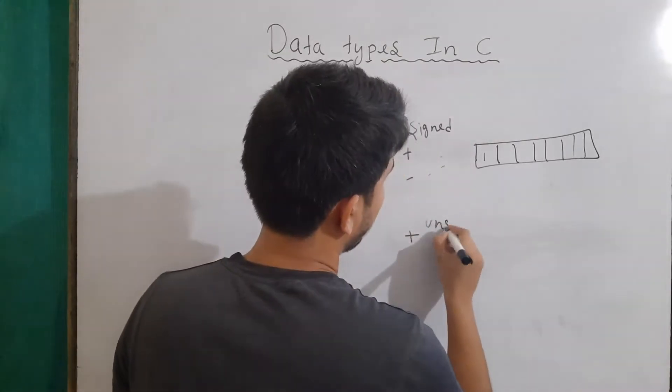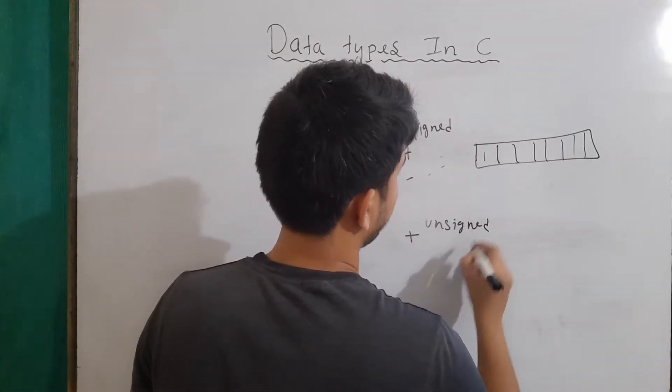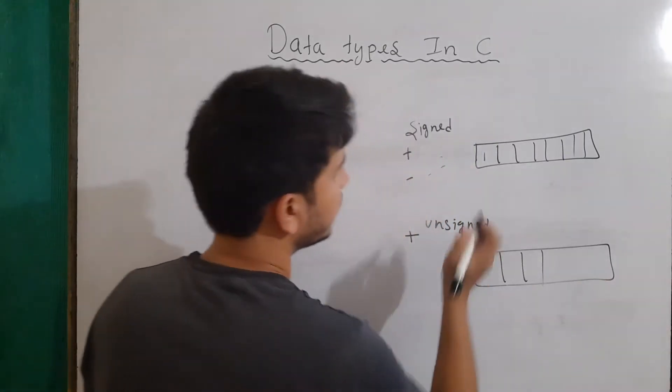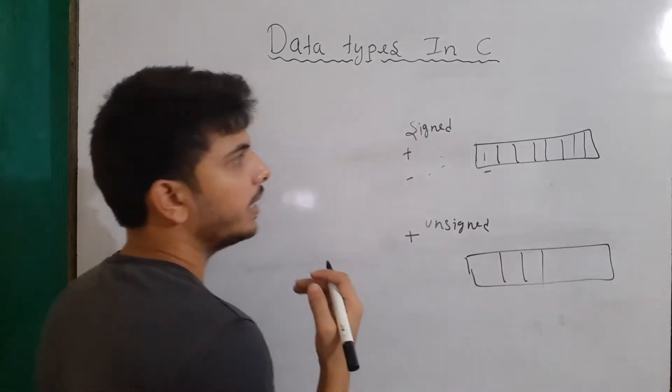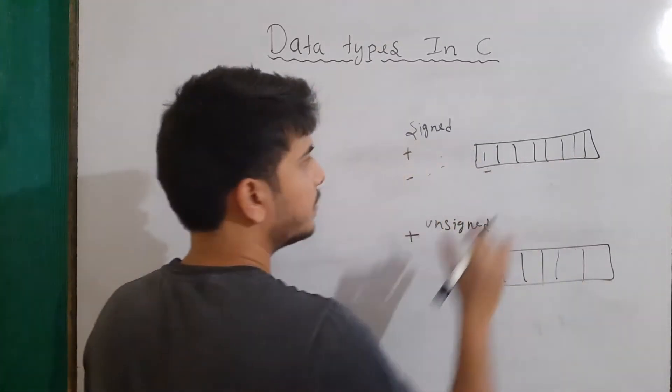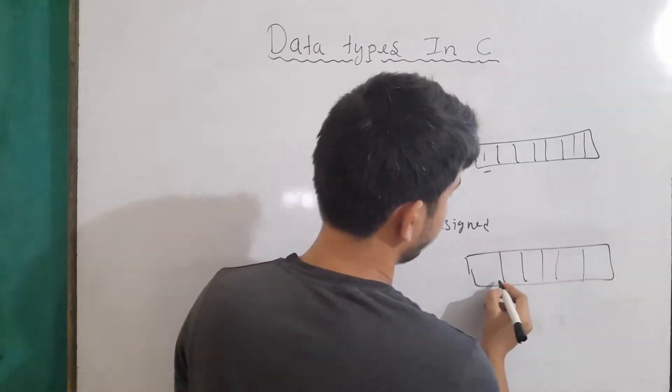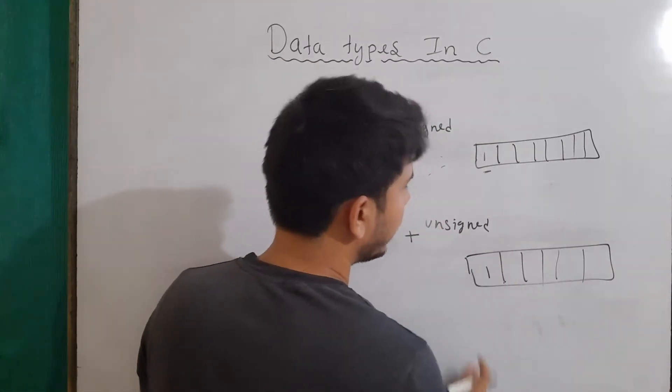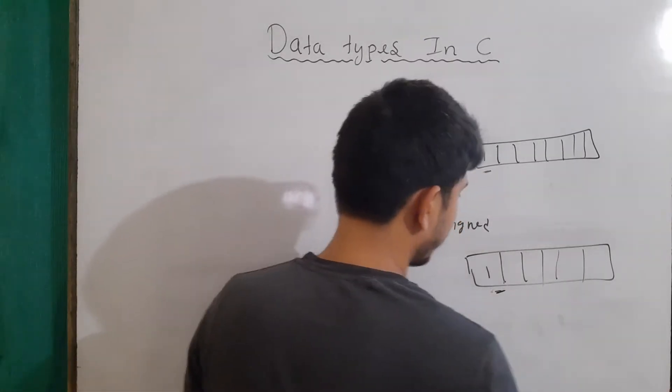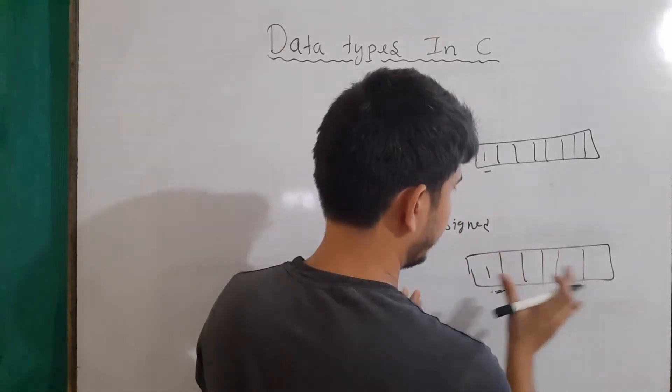In the unsigned numbers, our number will always be positive. In that case, this bit will no longer act as a signed bit. So this bit will be used as a general representation of our number. Now if I'm writing here 1, then this doesn't mean that this will act as a negative number, and the range of the unsigned will increase.